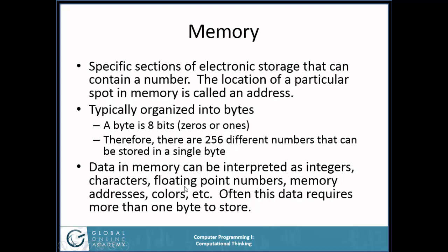The data in memory can be interpreted as integers — numbers like 4, 17, 135, or negative 12 — or as characters like the letter X or a smiley face symbol, or as floating point numbers with a decimal point, or as addresses of other places in memory, or as colors, and so on. Often this data requires more than one byte to store. When we talk about computer programming, we're going to learn how we name places in memory so we can use it efficiently, because humans aren't good at thinking about six gigabytes of zeros and ones. We need to name areas and know what they're going to be interpreted as.